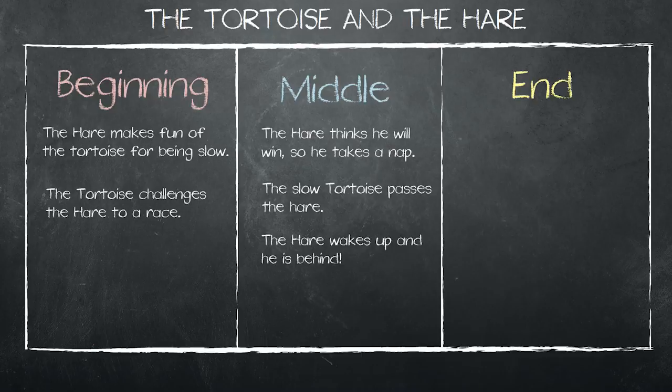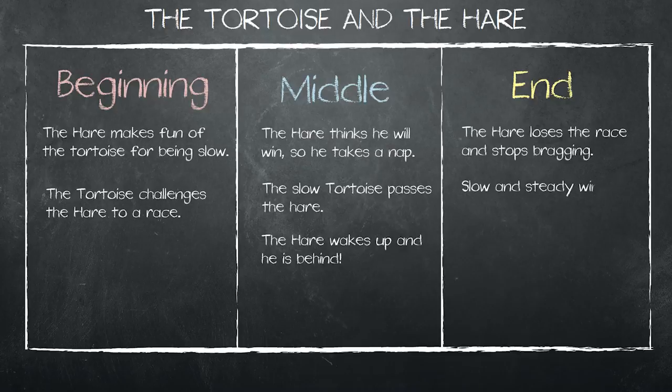Finally, ask the students what happened at the end of the story and write their answer in the last box. The hare loses the race and he stops bragging. Slow and steady wins the race.